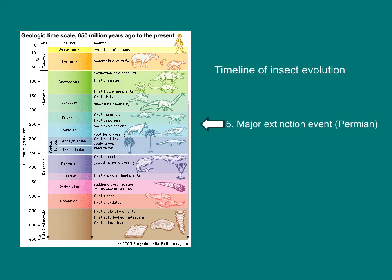While some of the major events in insect evolution, such as wings, allowed insects to diversify, other events, such as major extinction events, led to dramatic loss of insect diversity. There was one such major extinction event at the end of the Permian, called the End Permian Extinction. It wiped out much of insect life on Earth, including most of the Paleozoic insect orders.